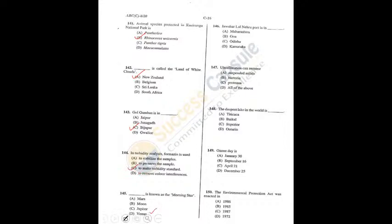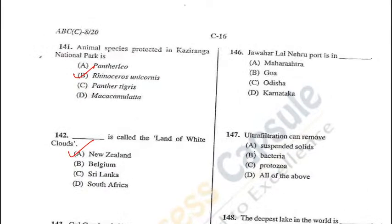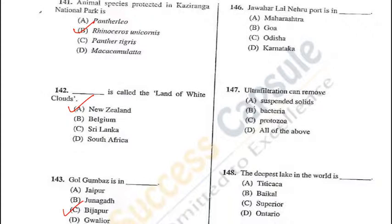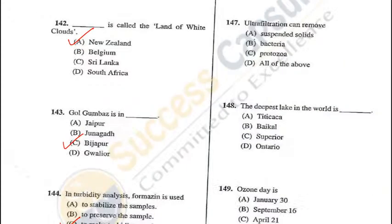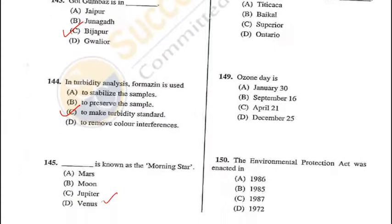Question 146: Jawaharlal Nehru Port (Navasheva) is the famous port in Mumbai, Maharashtra — A is the correct answer. Question 147: Ultrafiltration can remove suspended solids, bacteria, protozoa, and some viruses — D is the correct answer. Question 148: The deepest lake in the world is Lake Baikal in Siberia, Russia — B is the correct answer. Question 149: World Ozone Day is observed on September 16 — B is the correct answer.